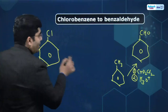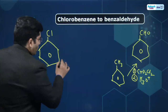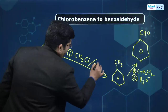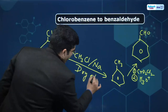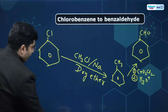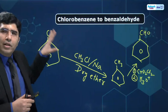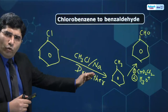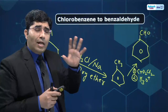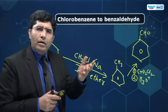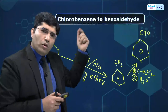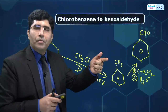Now, how to go from chlorobenzene to toluene — we just learned that earlier. So chlorobenzene → toluene is done easily: CH3Cl + sodium in dry ether (Wurtz-Fittig reaction). So both name reactions are useful: Wurtz-Fittig reaction gave us chlorobenzene to toluene, and then when we studied aldehyde ketones and carboxylic acids chapter, benzaldehyde from toluene can be prepared by three methods.